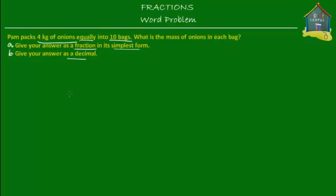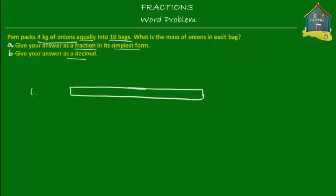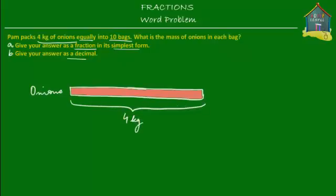So what Pam had was she had 4 kilograms of onions. If you make a model for that, it will look something like this. So let's say that this is the onions that Pam had, and this was 4 kilograms. This is the red onions that Pam had and the mass of this was 4 kilograms — so this is 4 kg.